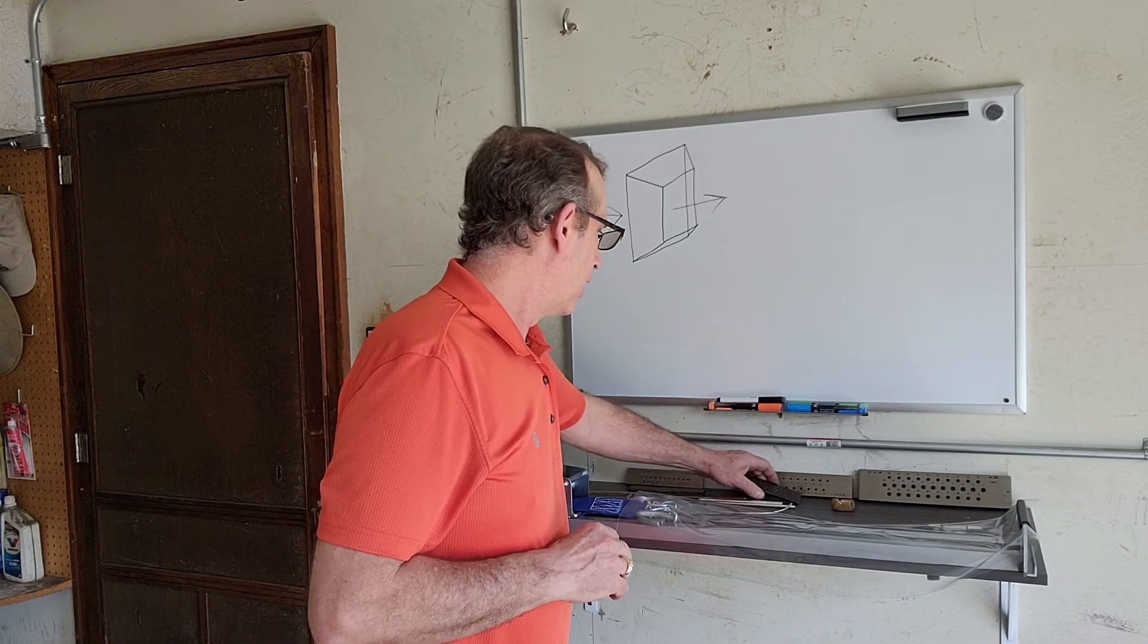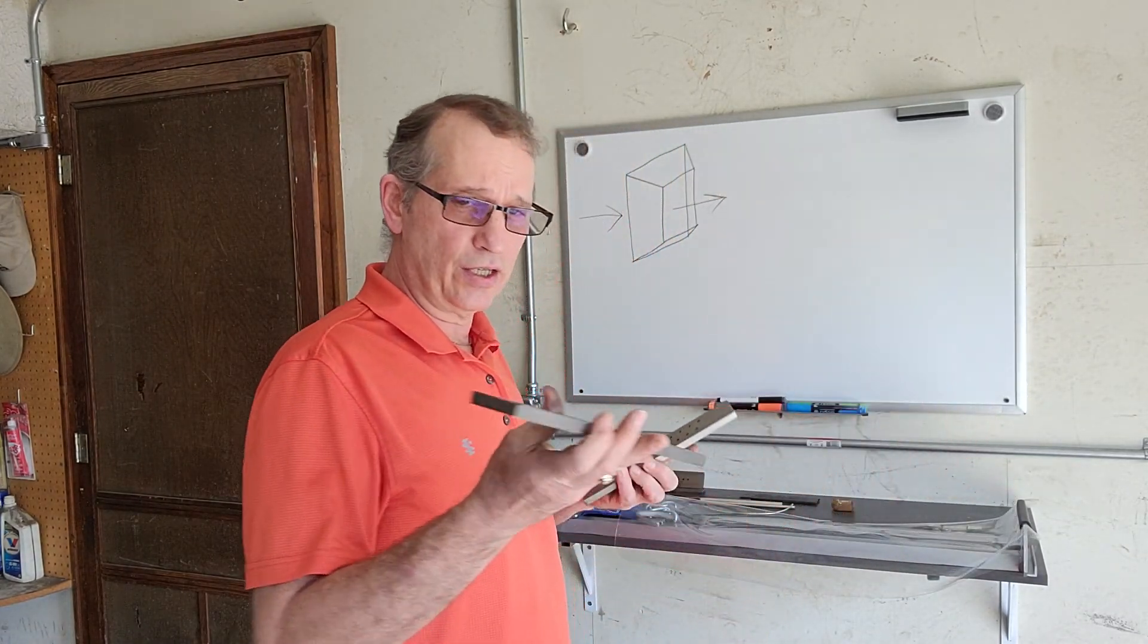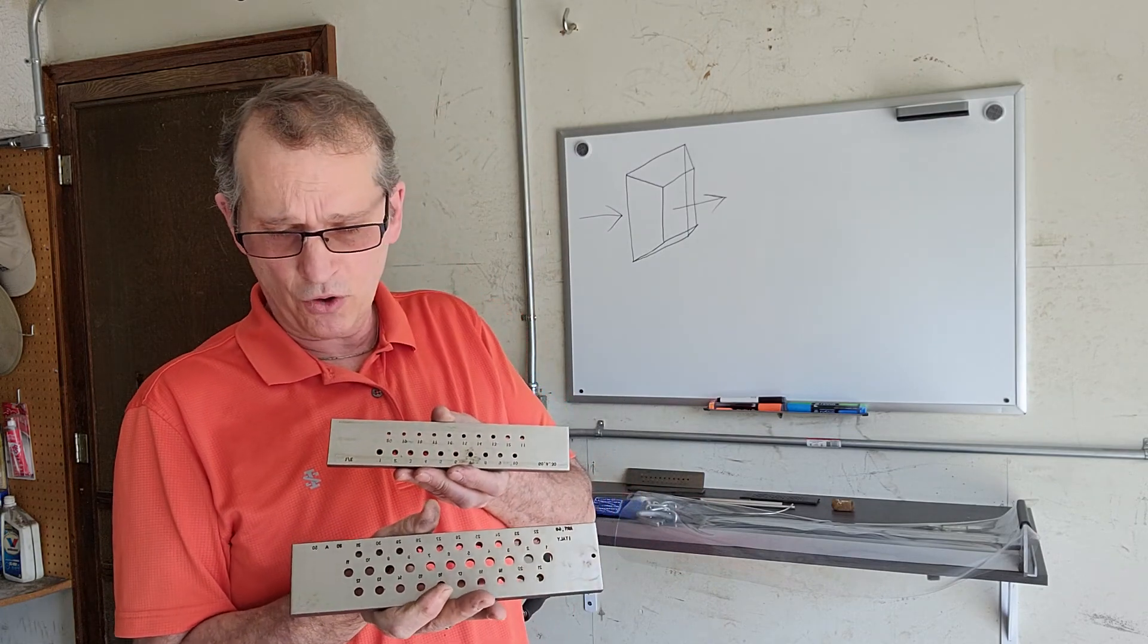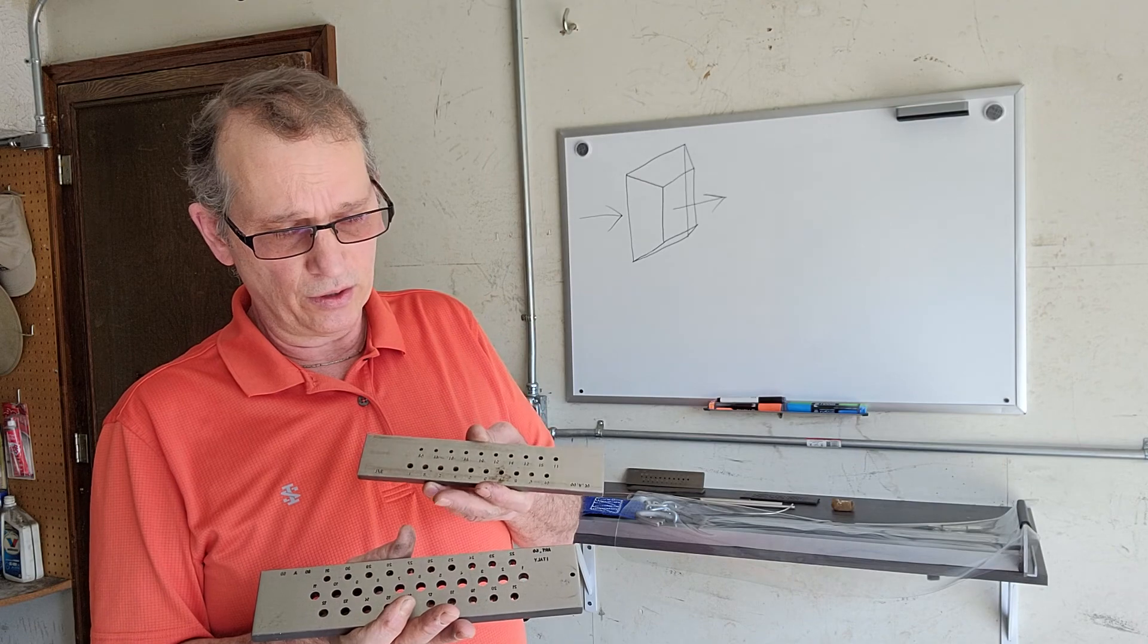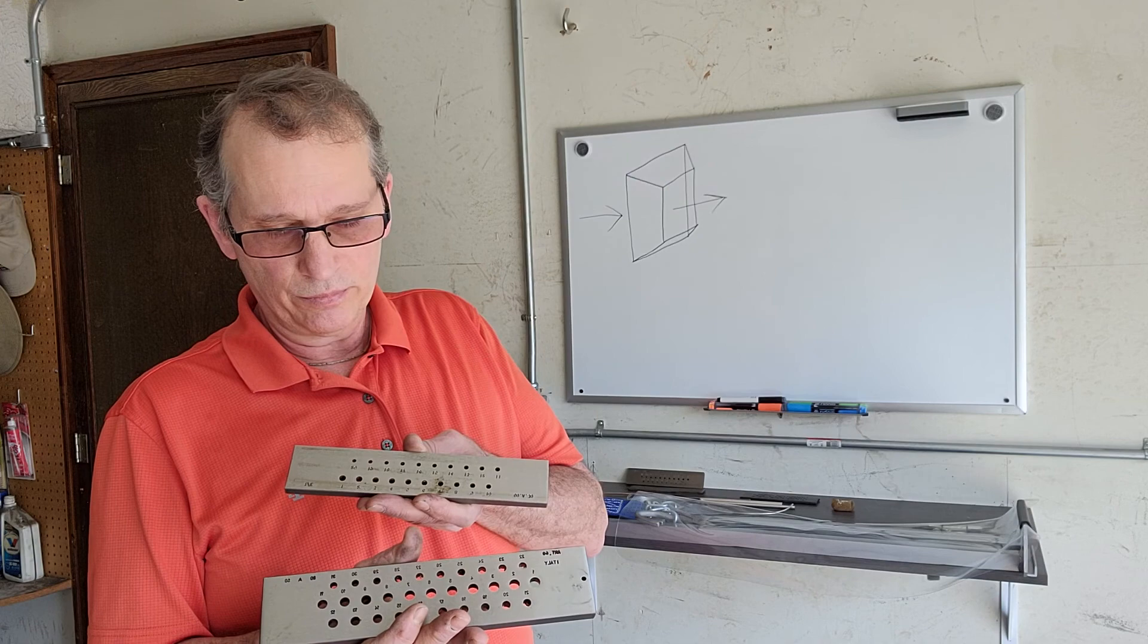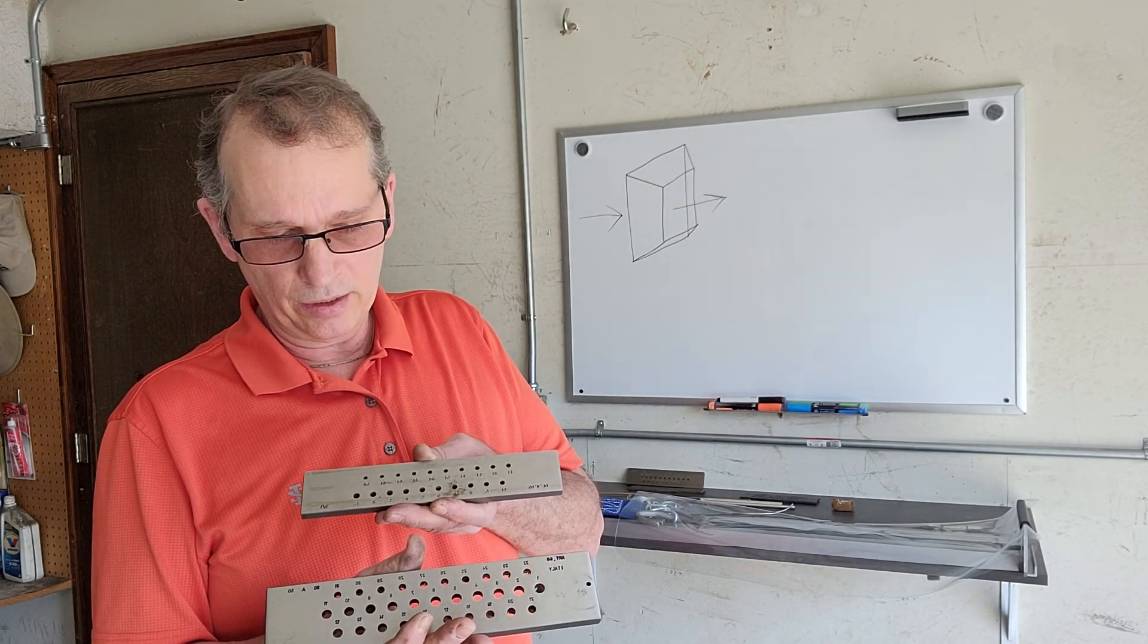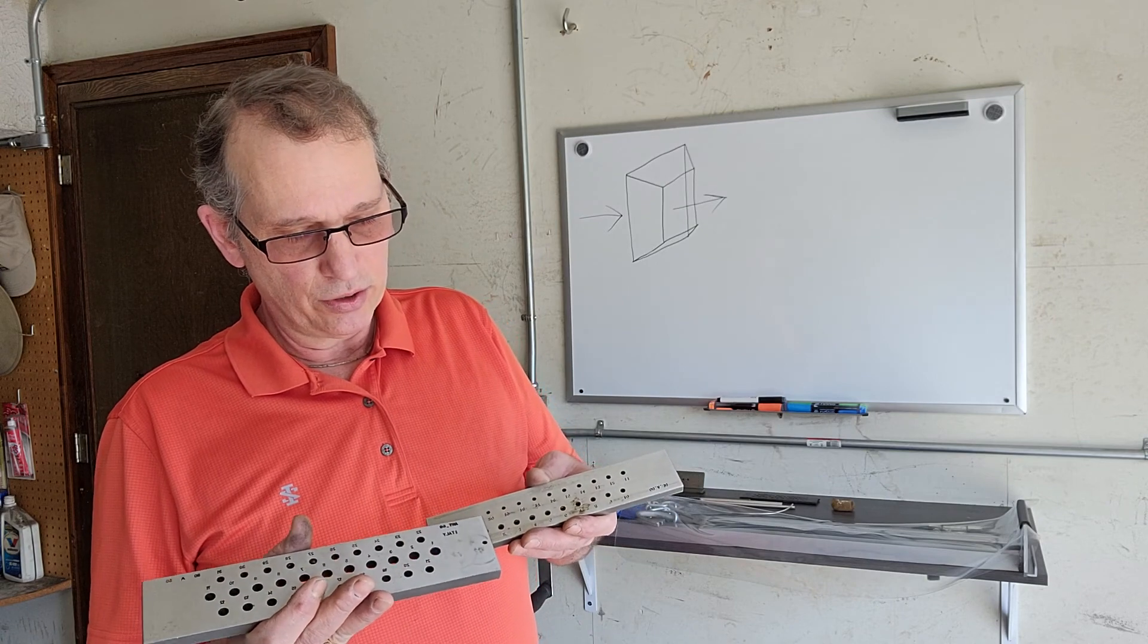A good example of that is this couple of plates here. These are actually round draw plates and you can see that this one begins with a very large wire which is great for drawing down tubing and that sort of thing.